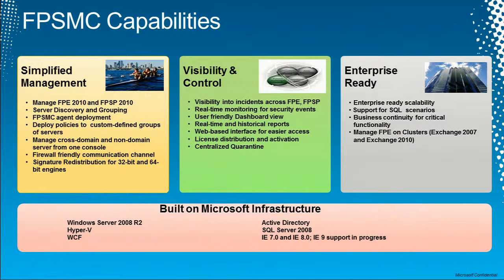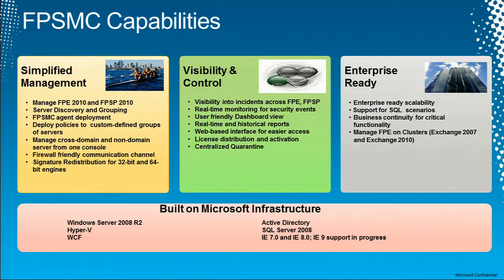We also do signature redistribution for both the 32-bit and 64-bit versions of the engines, so you can do a central pull-down from the Forefront Internet site and have your engines distributed from a central point. It provides visibility and control, monitors for events, and there's a dashboard showing recent activity. It provides real-time and historical reporting. It's a web-based interface, so no client installation is needed. And it provides a central quarantine, so you can pull down quarantines from individual machines to the central repository and manage and release them centrally.